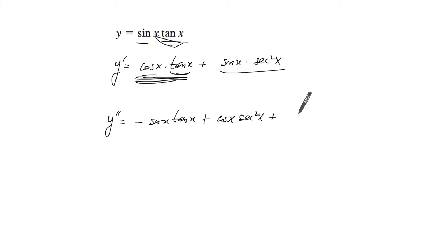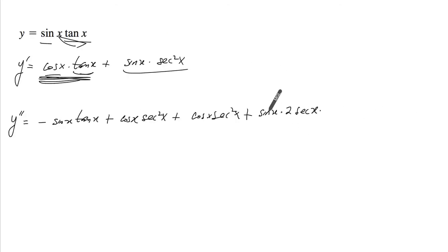Now let's differentiate this again. Using product rule, you get cosine of x secant squared x plus sine of x multiplied by the derivative of that, which is going to be, first of all, 2 secant x, and then we're going to chain that by the derivative of secant of x, which is secant of x tangent of x. That's the derivative of secant of x.